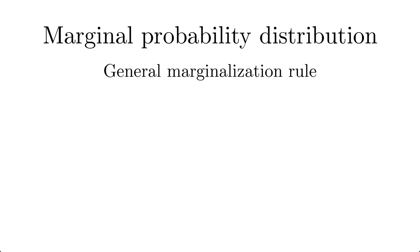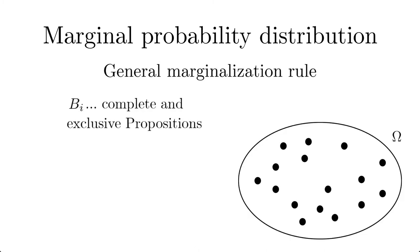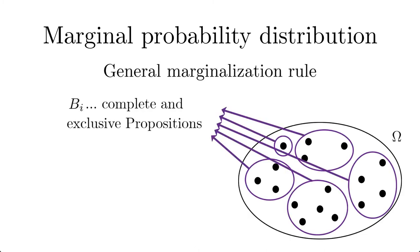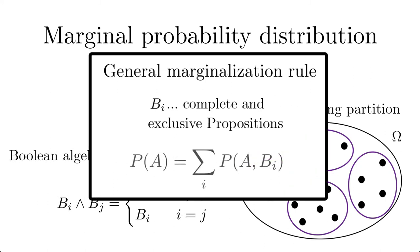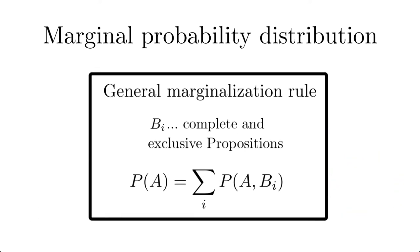This brings us to the marginalization rule in its most general form. We consider any set of complete and exclusive propositions b sub i, which means they form a non-overlapping partition of the sample space. Then we obtain the generalized marginalization rule. The importance of this rule cannot be overestimated. Again, a generalization to more than two variables is obvious.